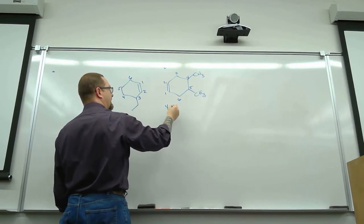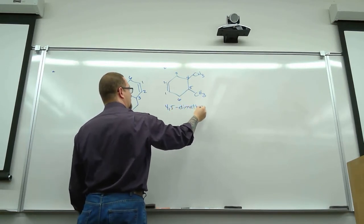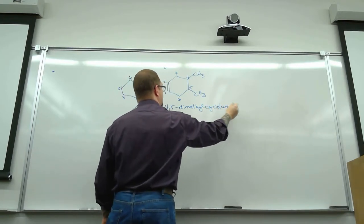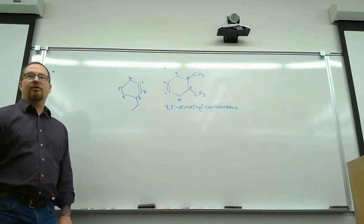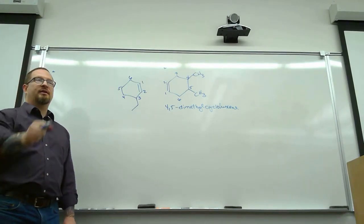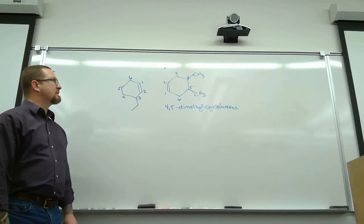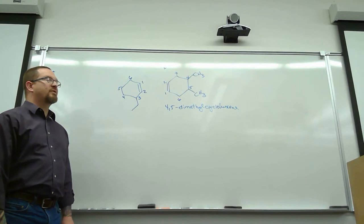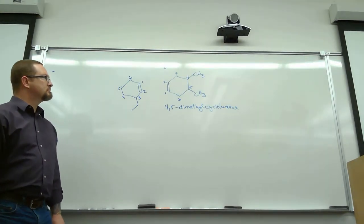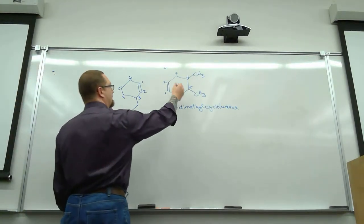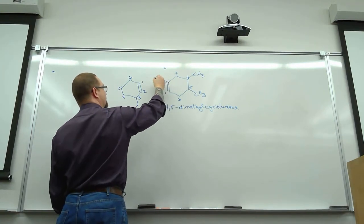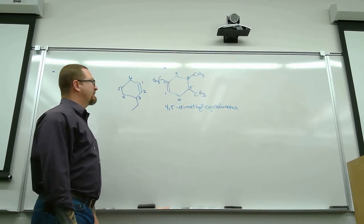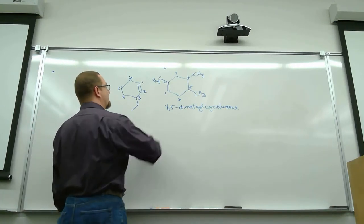Going through the double bond, we would have a 4,5-dimethyl-cyclohexene — no number on the parent ring because we know where the number has to go. You can go either direction because of the symmetry here, so I'm going to arbitrarily go through the double bond.